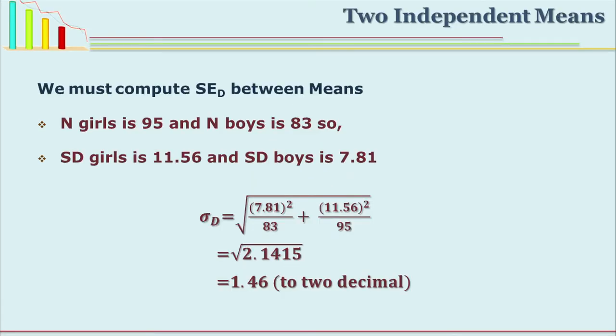The first thing we must compute is the SE of difference between mean one and mean two. N equals 95 for girls and 83 for boys. SD for girls is 11.56 and SD for boys is 7.81. If you substitute those values, you will find that SE of difference of means is 1.46. This is the standard error of difference between two means.